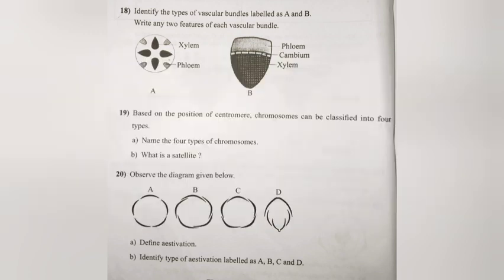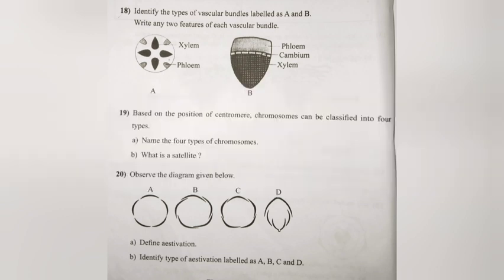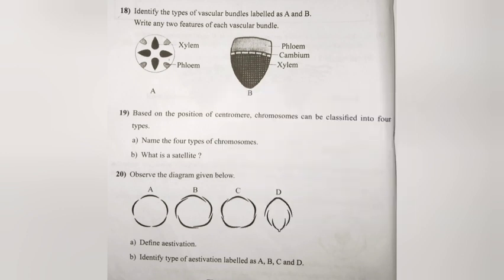Question 20: Observe the diagram given below. (A) Define aestivation. Answer: The mode of arrangement of sepals or petals in a flower bud is called aestivation. (B) Identify the types of aestivation labeled as A, B, C, and D. Answer: A — Valvate. B — Twisted. C — Imbricate. D — Vexillary.